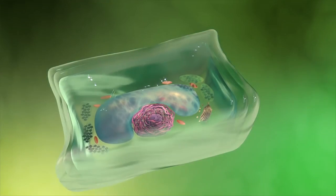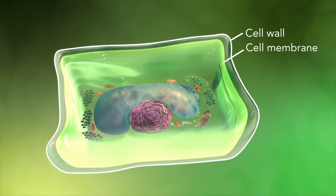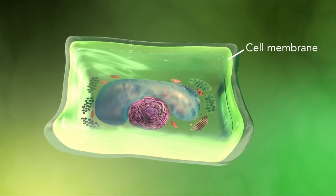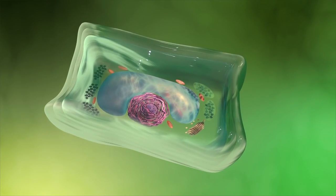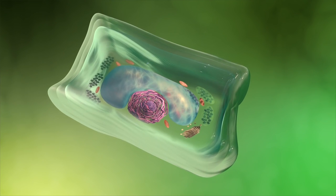Plant cells also have a cell wall outside of their cell membranes that shape, support, and protect the plant cell. Animal cells never have a cell wall.